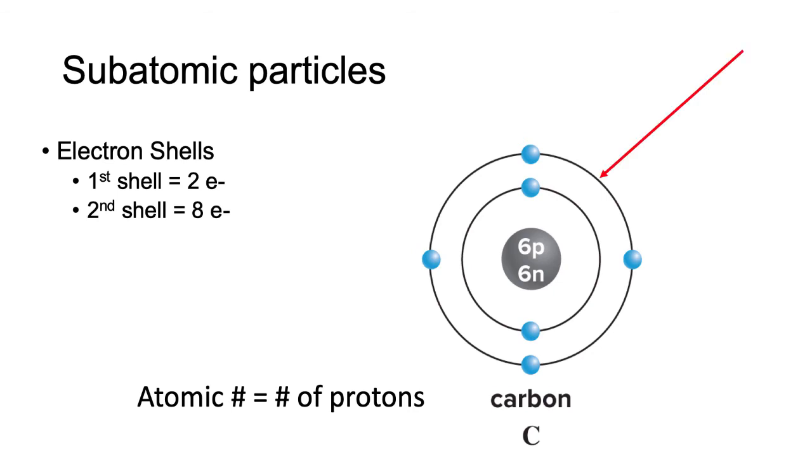There are more shells, but we won't be covering them in this course. We don't have enough electrons to go further than this in carbon. Whichever shell is the outer shell is called the valence shell. In the case of carbon, the second shell is the valence shell.